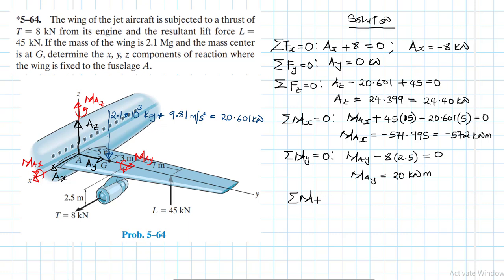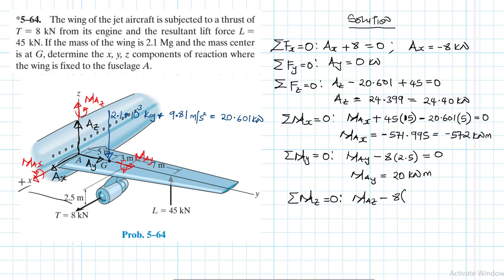Finally, summation of moments about the Z axis equals zero. The thrust of 8 kilonewtons causes a negative moment about the Z axis with a lever arm of 3 + 5 equals 8. So M_az minus 8 times 8 equals zero, giving M_az equals 64 kilonewton-meters, and the assumed direction is correct.